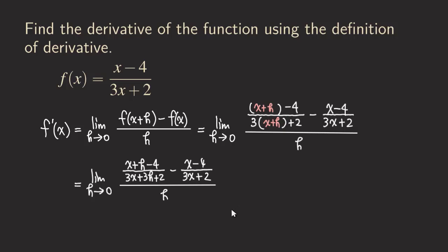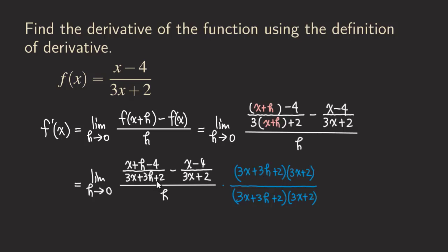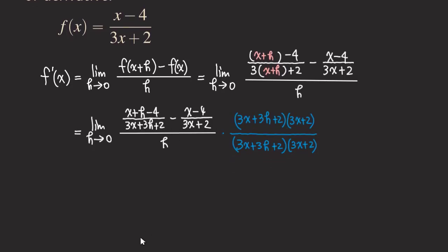The next step is to multiply the top and the bottom by the LCD of those two fractions. The reason is that we can turn this complex fraction into just a fraction so that we don't have fractions inside fractions. So we multiply the top and the bottom by three x plus three h plus two, times another factor, three x plus two. We're multiplying by one, so we're not changing the problem. When you multiply this with the first fraction, the three x plus three h plus two cancels, leaving just three x plus two in the numerator.